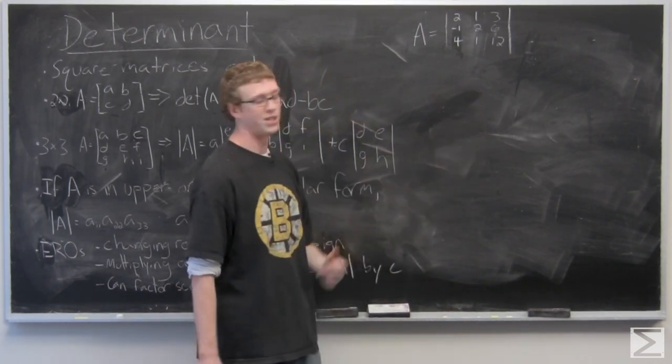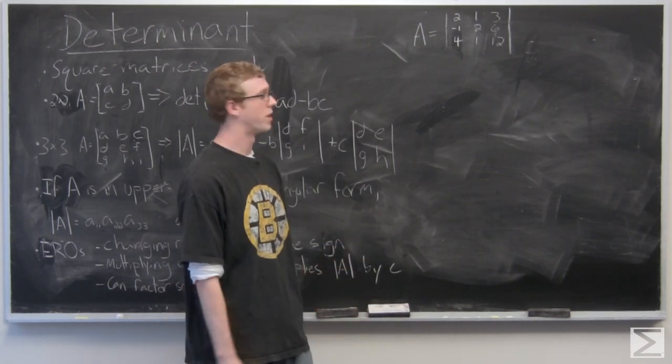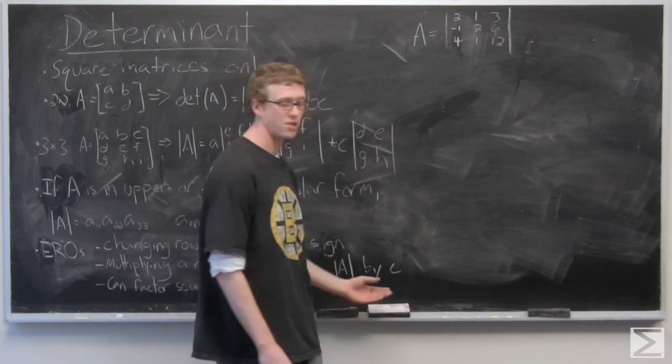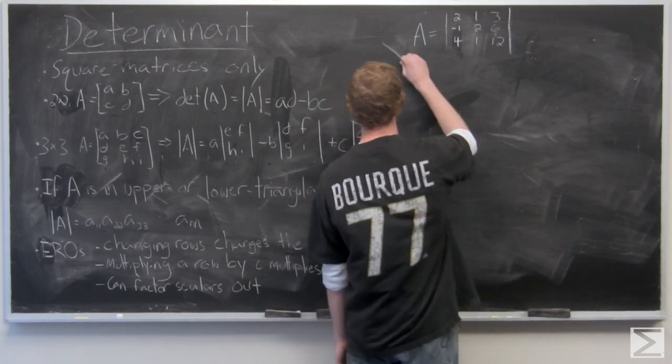We're going to start off by just taking the determinant in the normal style and then I'll put the matrix into upper triangular form and find out what happens when we use elementary row operations. So just multiplying it up as normal.